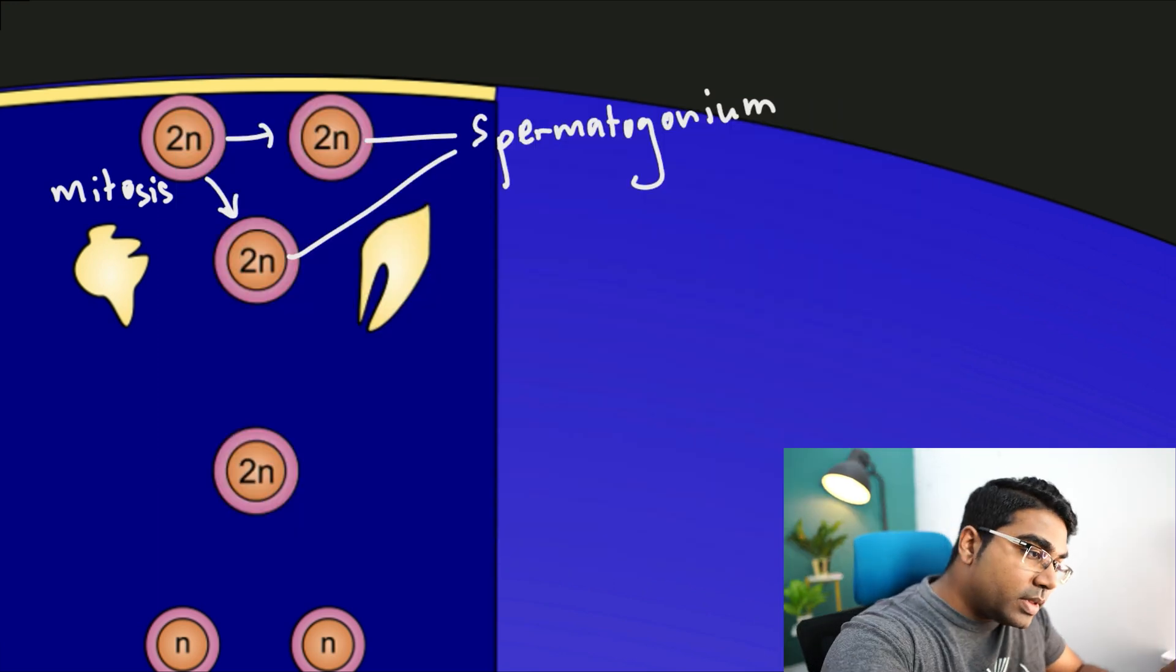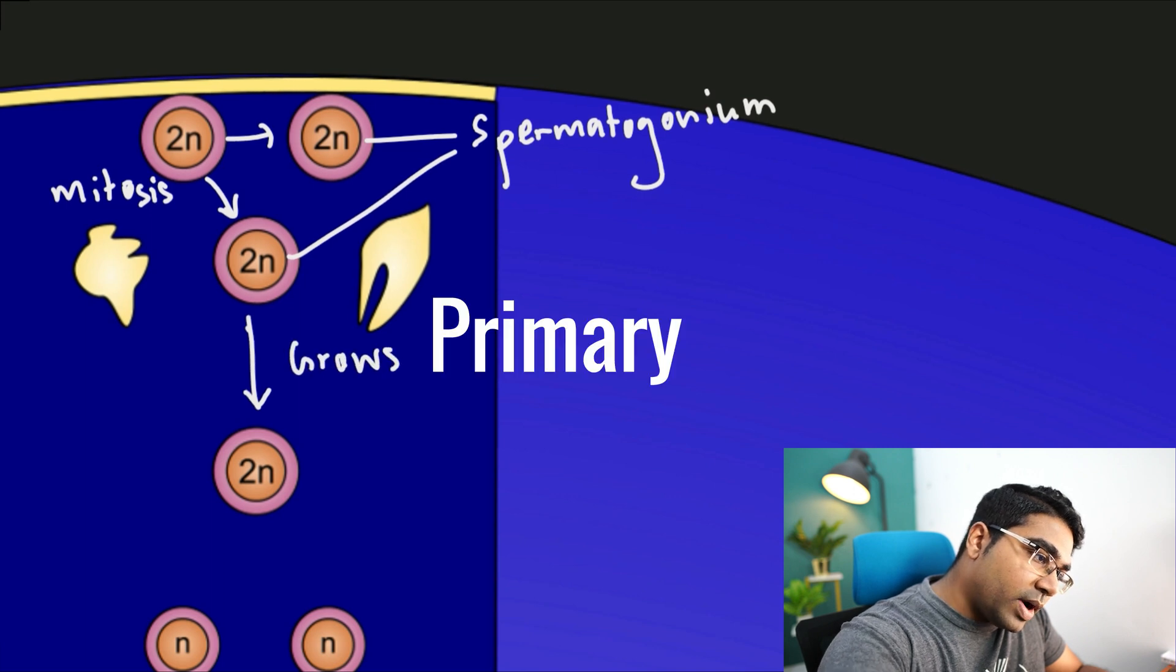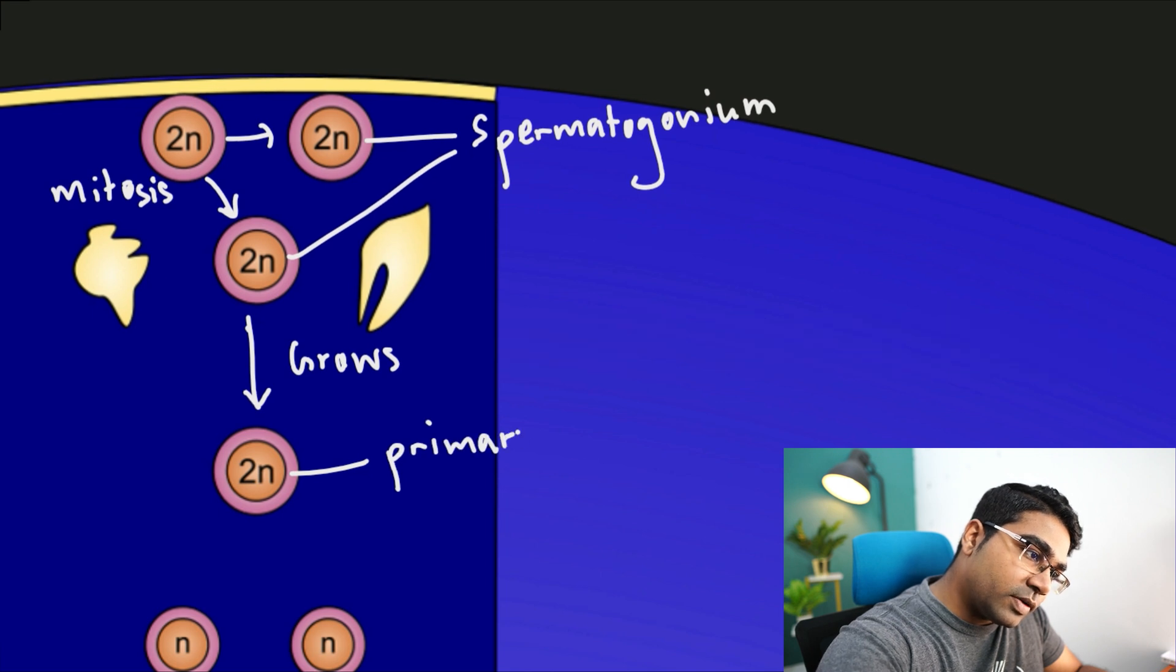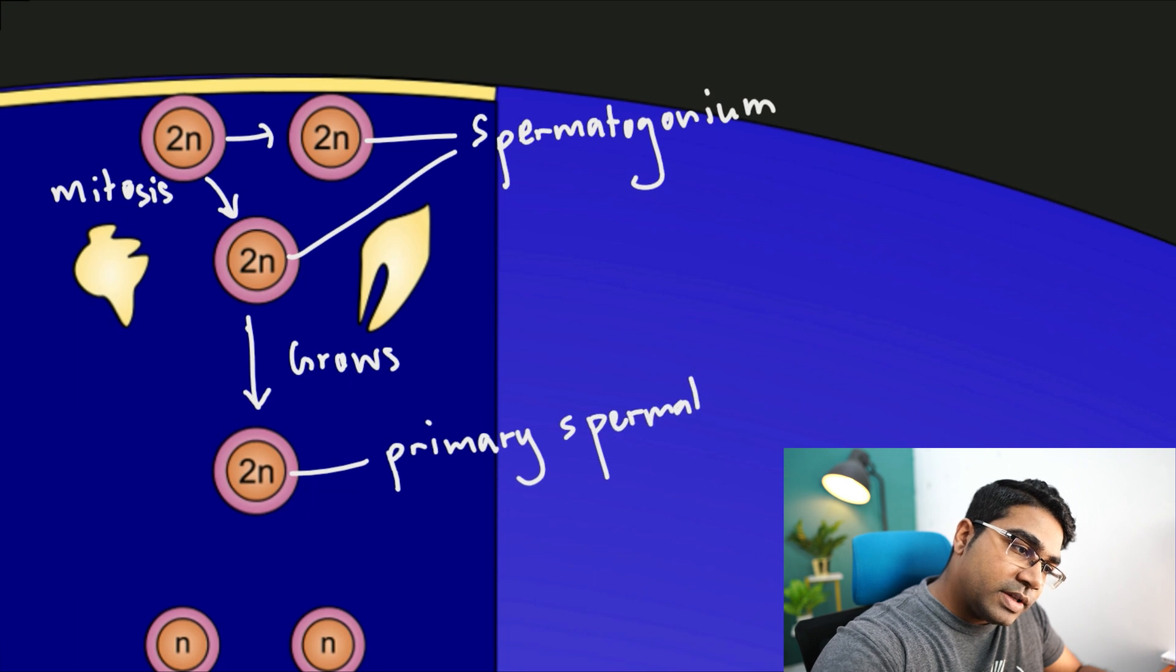The spermatogonium then grows and develops into the primary spermatocyte. This process of growth does not change the number of chromosomes, and therefore the primary spermatocyte still has the diploid number of chromosomes, 2N.